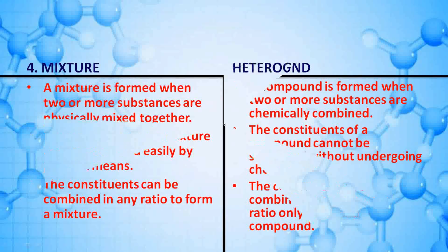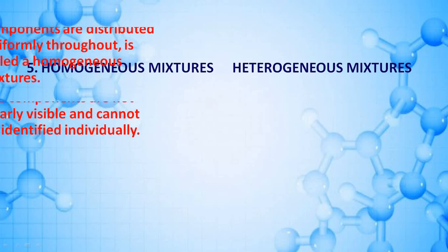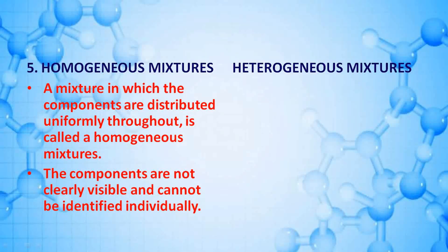A homogeneous mixture is a mixture in which the components are distributed uniformly throughout. The components are not clearly visible and cannot be identified individually.